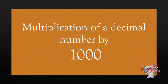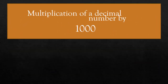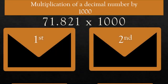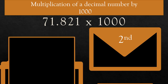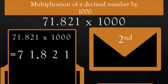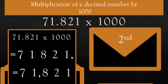Let us study multiplication of decimal number by 1000. For example, 71.821 × 1000. There are two ways to solve this question. First way: multiply 71.821 × 1000. The decimal point shifts three places to the right — 1, 2, 3. So the answer is 71,821.